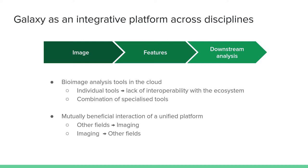The typical image analysis pipeline starts with an image that we want to extract features from to measure some attributes and then later perform a downstream analysis to draw some scientific conclusions. There are tools to perform every step but deploying them in the cloud is challenging for bioimage analysts, and usually this is targeted to individual tools which makes interoperability with the rest of the ecosystem even more complicated. This becomes especially problematic when the pipeline requires a combination of tools, which is very often the case, and Galaxy can help to improve interoperability here, acting as an integrative platform across disciplines.